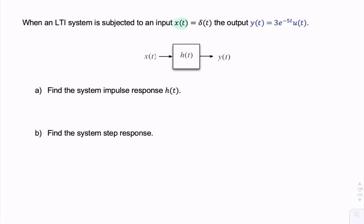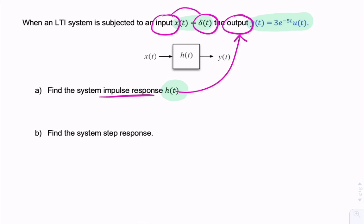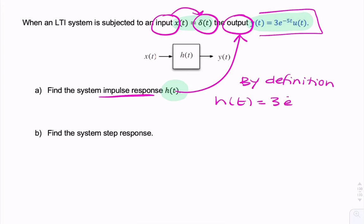In this question, we're given the input and the corresponding output of an LTI system, and we're asked for the impulse response. Now remember, the impulse response by definition is the output when the input happens to be an impulse. So H(T) is the output when the input is an impulse. By definition, the impulse response H(T) is simply what we're given in the question — it's 3e^{-5T} u(T).